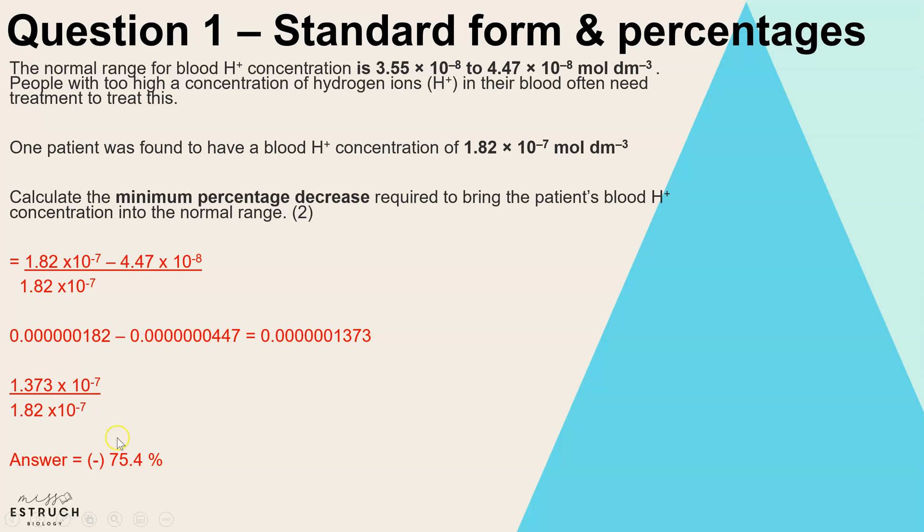As standard form, 1.373 times 10 to the minus 7 divided by the original, we get an answer of 75.4 percent. Now the reason I put the minus in brackets is because I've told you the question it's a decrease, so we know it'd be a negative value. That's question number one. Two marks if you get the percentage correct. If you manage to get the raw difference, then you'd get one mark.